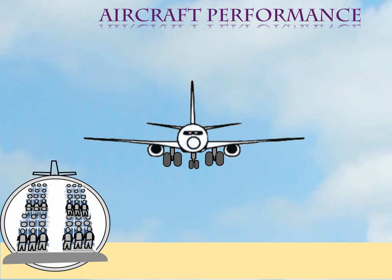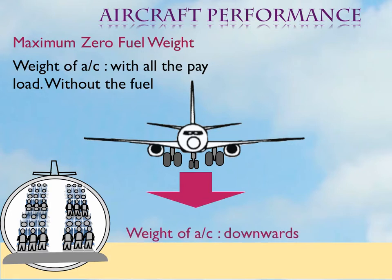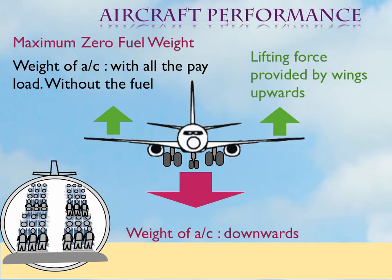Next is another important parameter: the maximum zero fuel weight. When the aircraft is loaded with passengers and/or cargo, this is the zero fuel weight — that is, the weight of the aircraft without the fuel. When the aircraft is loaded, the weight acts as a downward force passing through the fuselage of the aircraft. This has to be balanced by the lift generated by the wings, which acts in the upward direction. Contrary to this, if the wings contain fuel, the downward and the upward force will act almost in the same line through the wings.